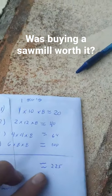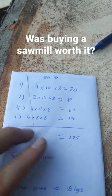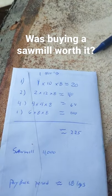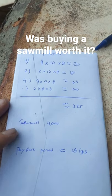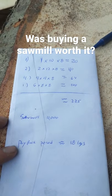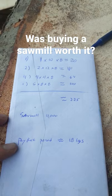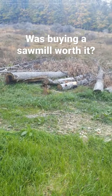Which gives us $225 worth of lumber from this one tree. Probably better ways to cut it down, but this is what I got out of it. Sawmill cost us $4,000, which gives us 18 logs roughly as a payback period—18 eight-foot logs.